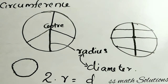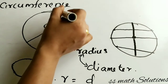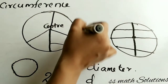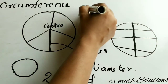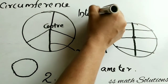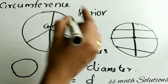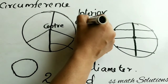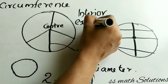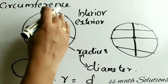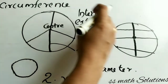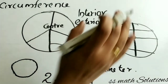Hope you got this much. Now we are coming to the next one. This part inside of the circle is called the interior of the circle, and the outside of the circle is called the exterior. Interior of the circle, exterior of the circle.